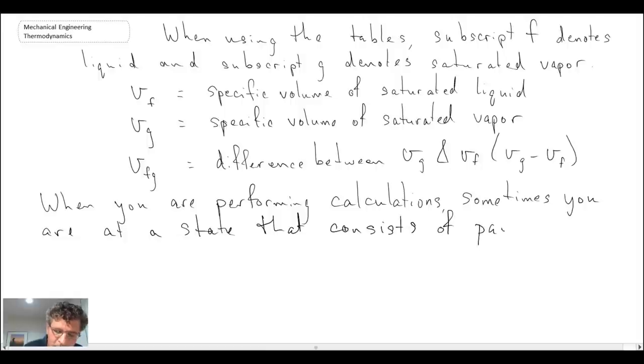So when we're in the two-phase region we have partial liquid but we also have partial vapor, and when we're there we use a quantity called the quality.